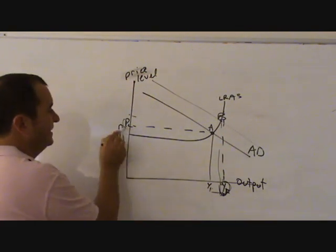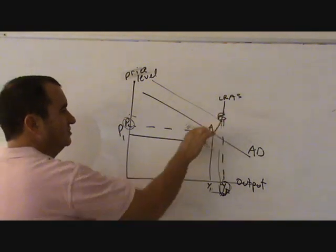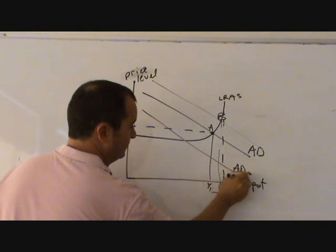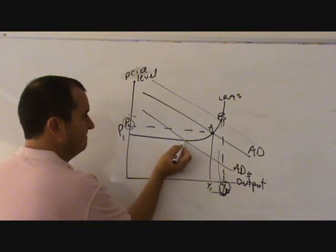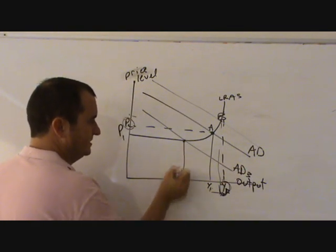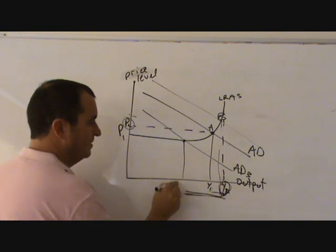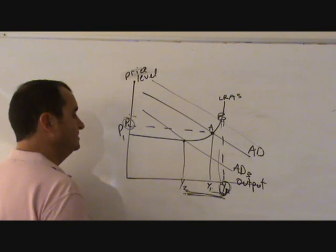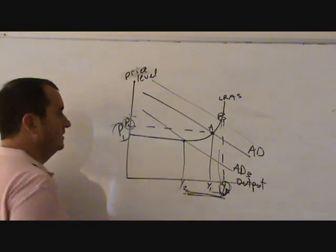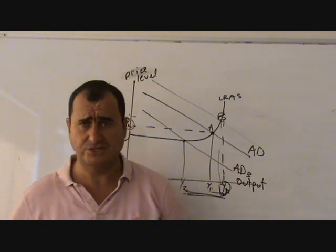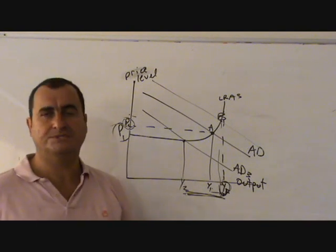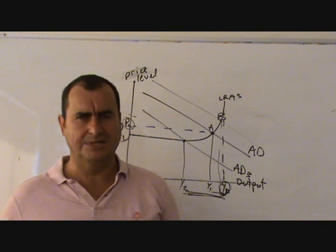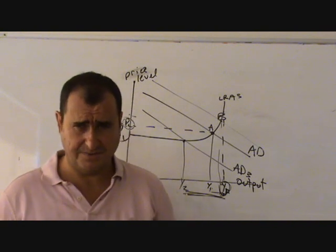If, on the other hand, they didn't like this price level, and they wanted to reduce aggregate demand to, say, AD3, and take the economy back to here, and to suffer some unemployment, the difference between Y2 and YF would be unemployment, but have prices nice and low at P1 and control inflation, well, then they would do the opposite. They would cut government spending, and they would raise tax, and this would limit the components of aggregate demand.